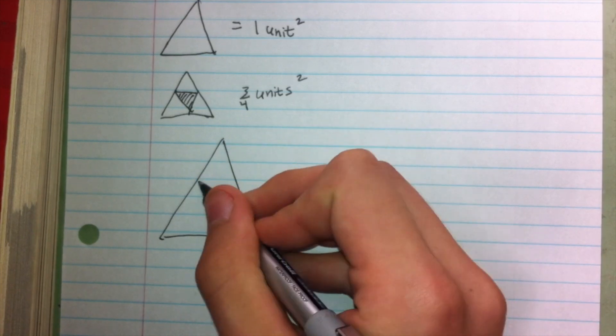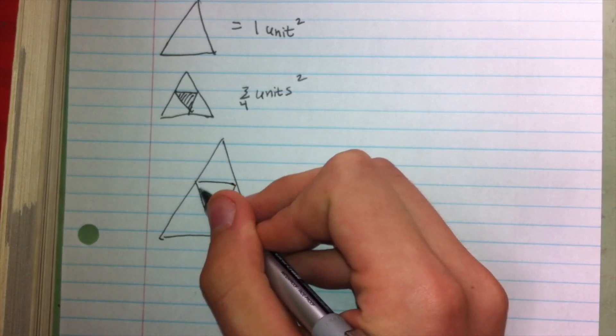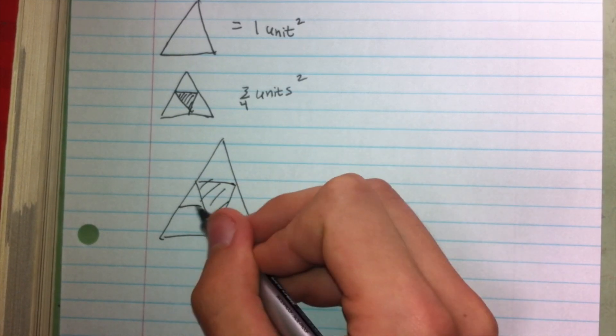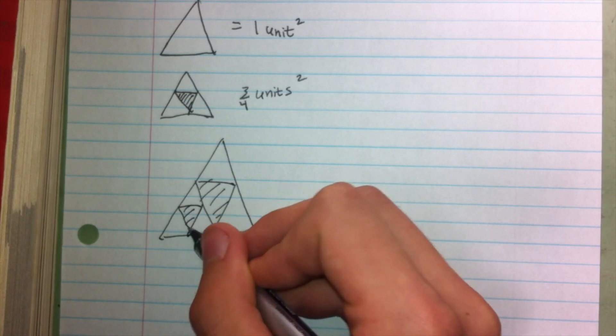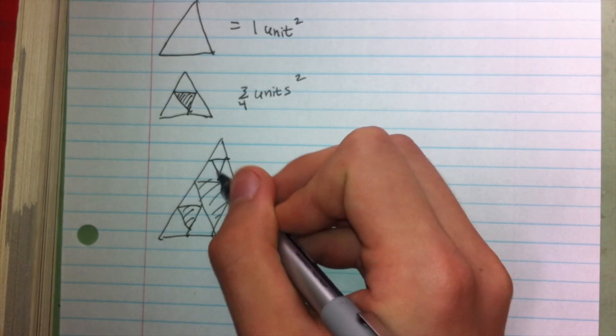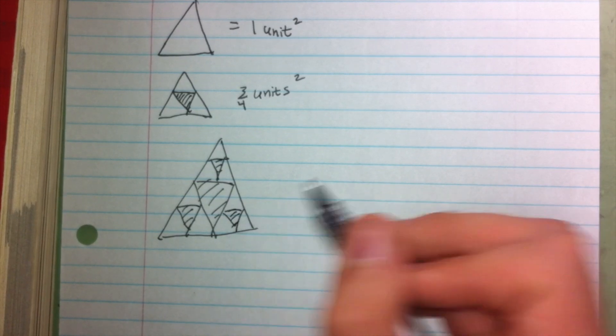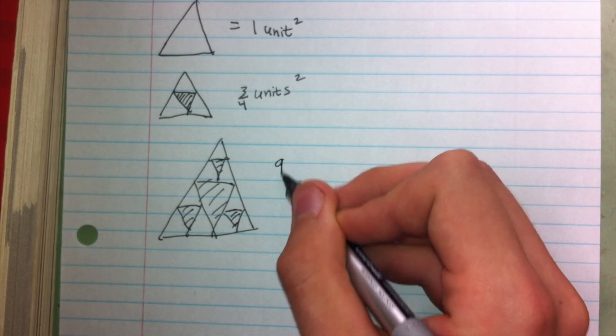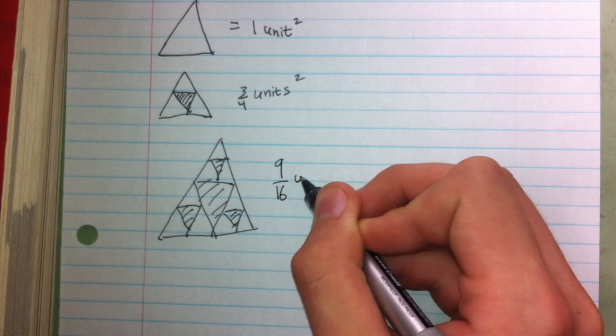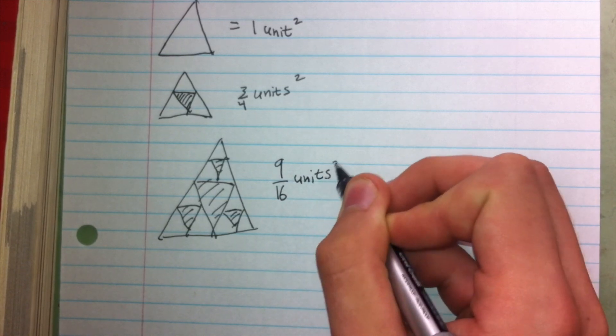When we do another iteration, what we're going to do is take a fourth out of each of the remaining segments of area, and when you do that math, what we have now is nine-sixteenths units squared.